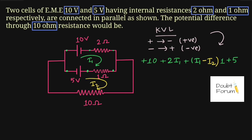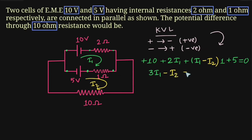This way we have completed the first loop. From KVL, the algebraic sum of all voltage drops inside a closed loop is always equal to zero. This gives us our first equation: 3 times i1 minus i2 equals... rearranging, this becomes minus 15. So Equation 1 is: 3i1 - i2 = -15.